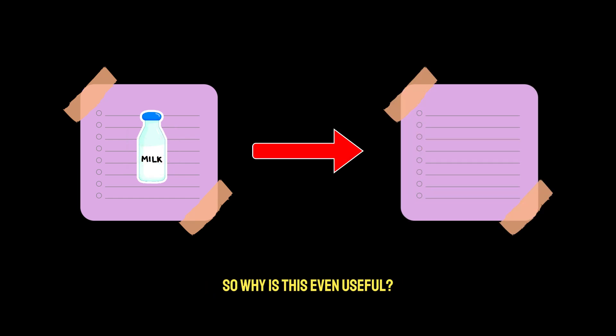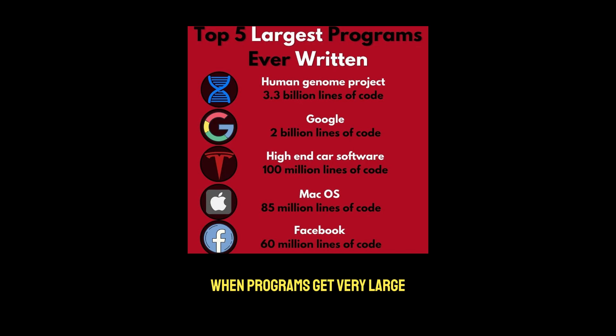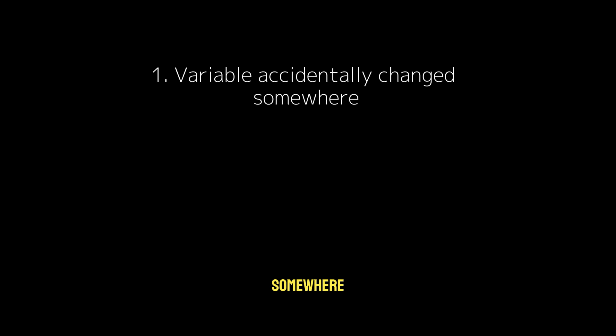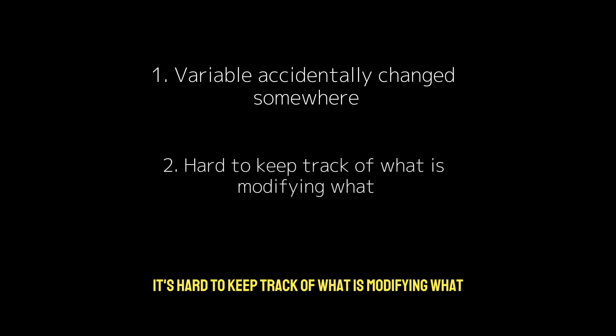So why is this even useful? When programs get very large, bugs often happen because of two things. One, a variable was accidentally changed somewhere. And two, it's hard to keep track of what is modifying what. Functional programming avoids these problems.